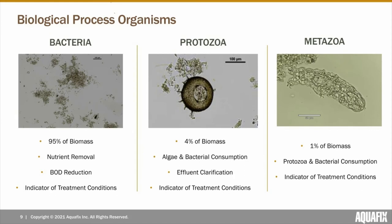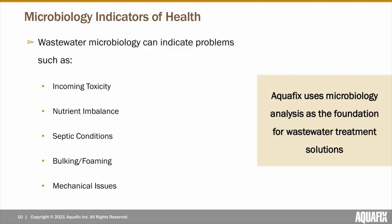These three groups all play important roles in the foundation of wastewater treatment. Not only are they important in the treatment process, but they also provide an indication towards the efficiency of your treatment process, overall biological health, and any potential issues occurring within your plant. Some of the issues that metazoa and protozoa can tell us is if there's any incoming toxicity, nutrient imbalances, septic conditions, bulking and foaming, as well as mechanical issues.